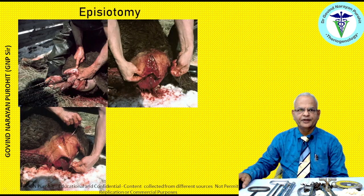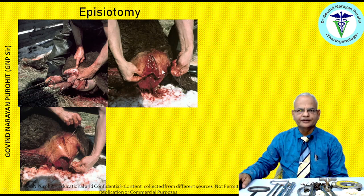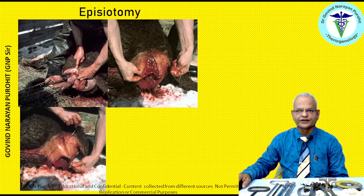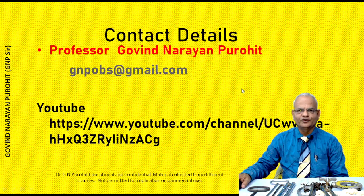For episiotomy, you need a scalpel to cut the vulva lips and then suture materials to suture them afterwards. If the fetal head is causing a problem and the vulva is not sufficiently dilated or is too small, you incise it with a scalpel and then suture the parts.